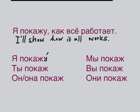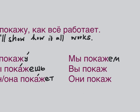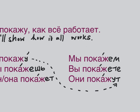Я ПОКАЖУ — stress on У. ТЫ ПОКАЖЕШЬ — stress on А, ending ЕШЬ. ОН/ОНА ПОКАЖЕТ — stress on А. МЫ ПОКАЖЕМ — you can hear ЕМ. ВЫ ПОКАЖЕТЕ — the polite form of you. ОНИ ПОКАЖУТ. There's similarity: У in the first person and УТ in the third person plural.